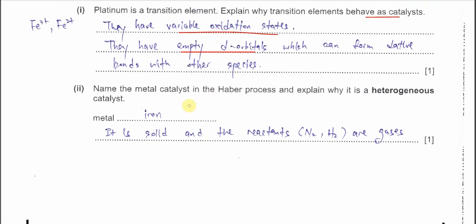Part B2: name the metal catalyst in the Haber process and explain why it is a heterogeneous catalyst. The Haber process is the formation of ammonia from nitrogen and hydrogen gas, and the catalyst is iron. Because iron is a solid and the reactants — nitrogen and hydrogen — are all gases, they are in different phases: solid and gas. Therefore, iron is a heterogeneous catalyst.